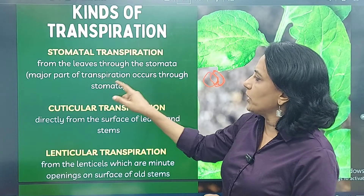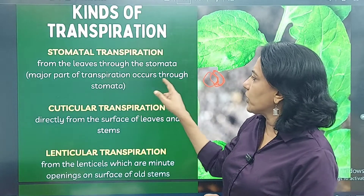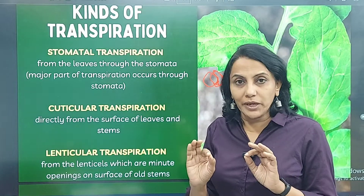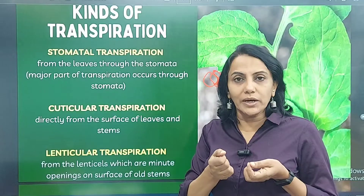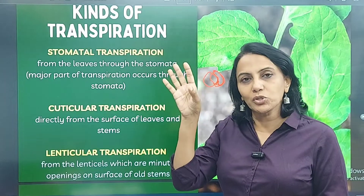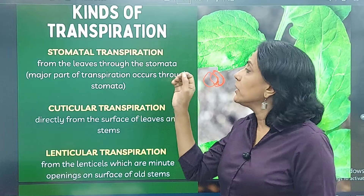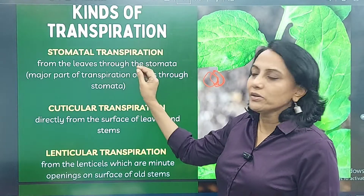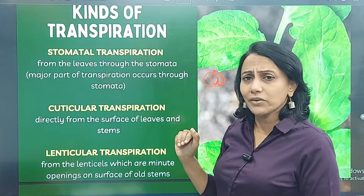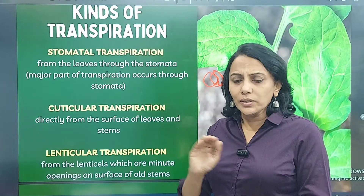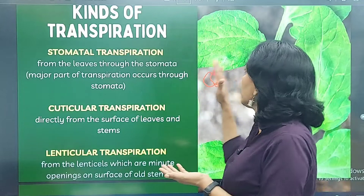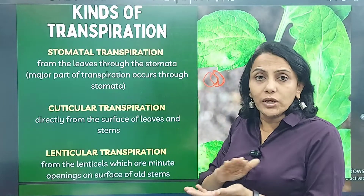The major part of transpiration occurs through the stomata, from the leaf surface through the stomata into the atmosphere. This is called stomatal transpiration and it accounts for the maximum amount of transpiration.